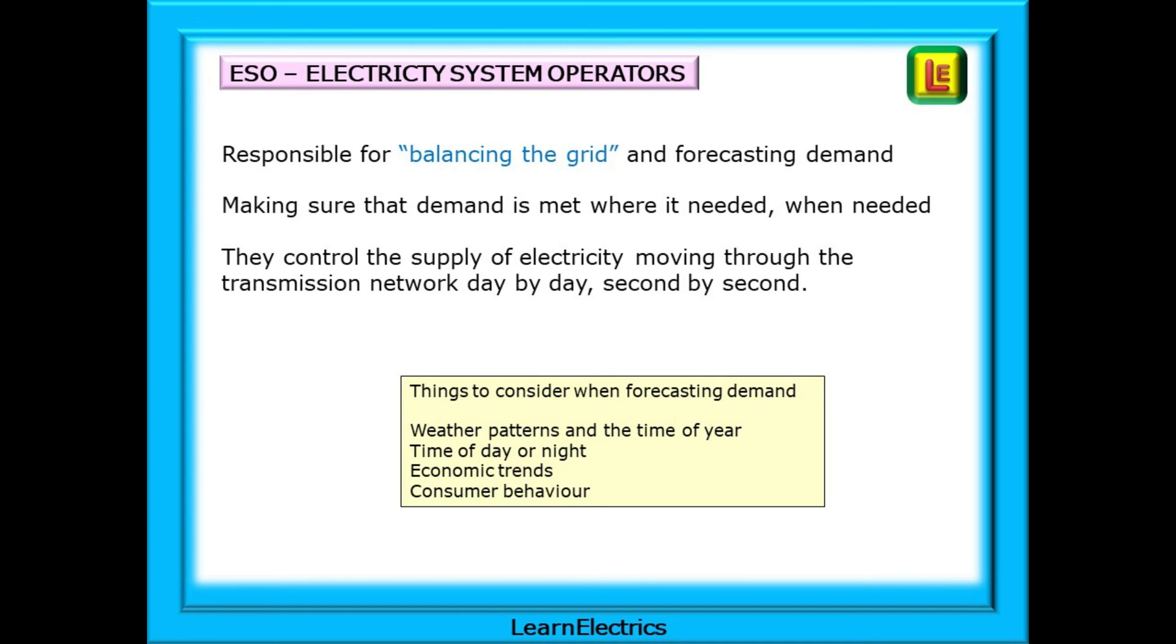The electricity system operators or ESO are responsible for balancing the grid and forecasting demand. They are responsible for making sure that demand is met where it is needed, when it is needed. They control the supply of electricity moving through the transmission network day by day, second by second, by asking for more generators to be brought online or asking for generators to be turned off as demand falls, perhaps at night. The things that they will consider when forecasting demand will be information such as the weather patterns for the day and the time of year, or the time of day or night, economic trends, is it a big shopping weekend, a bank holiday, and ups and downs of consumer behaviour.